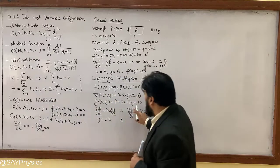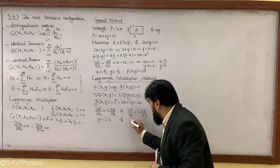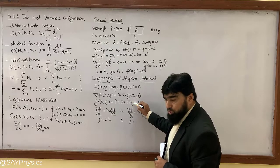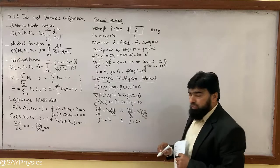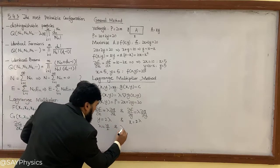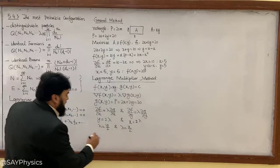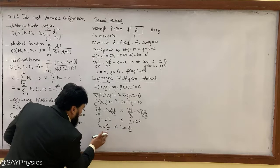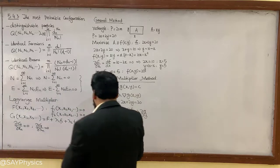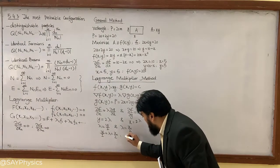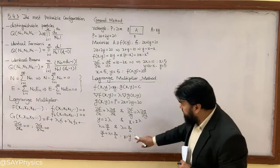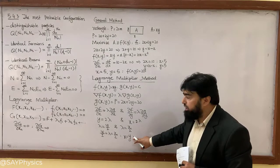If I take the derivative of f with respect to y, it comes out to be x, and the derivative of g with respect to y is 2, giving x = 2·lambda. So we get lambda = y/2 and lambda = x/2, which means y/2 = lambda = x/2, and therefore x and y are equal.